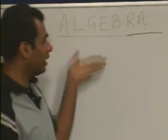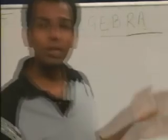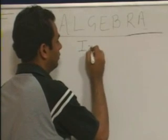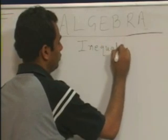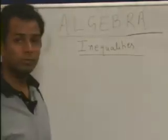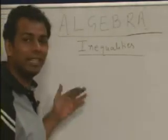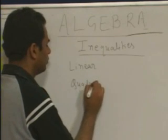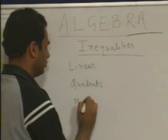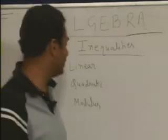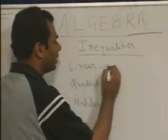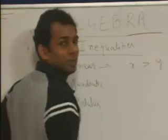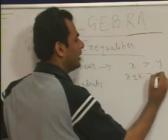Till now we have discussed polynomials, linear equations, quadratic equations, and modulus equations. The next part is inequalities. In case of inequalities we start with linear inequalities, then move to quadratic, then to modulus. For linear inequalities: if x is greater than y, then x ± k is always greater than y ± k.